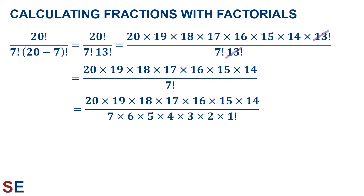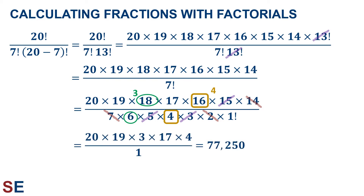Once we've done this, we can see that a few more terms cancel. The 5 and the 3 in the denominator cancel with the 15 in the numerator. The 7 and the 2 in the denominator cancel with the 14 in the numerator. The 18 in the numerator and the 6 in the denominator reduce to a 3 in the numerator. And the 16 in the numerator and the 4 in the denominator reduce to a 4 in the numerator. Everything in the denominator has been cancelled, and what's left in the numerator is 20 times 19 times 3 times 17 times 4, which equals 77,250.